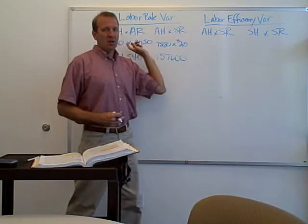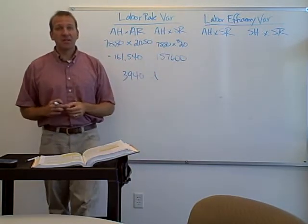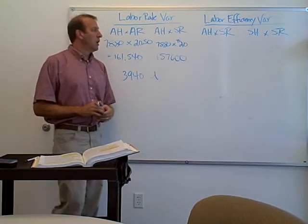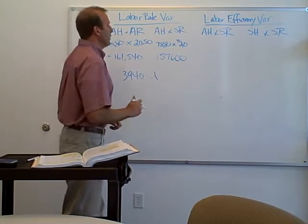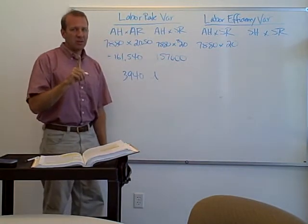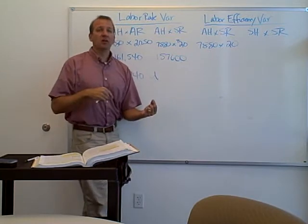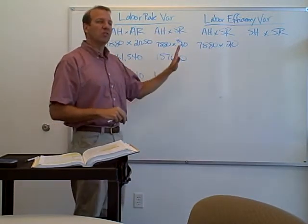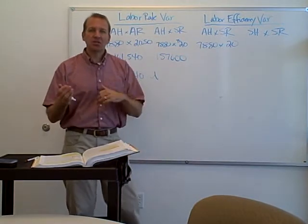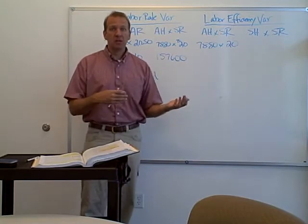You're going to have to memorize these formulas — I will not give them to you, and I won't give you the budget formats either. Now for the labor efficiency variance, notice this is easier than the materials variance. With labor, actual hours don't split into purchased and used. Whatever hours employees work, that's their actual hours — there's no purchased versus used distinction like with materials.